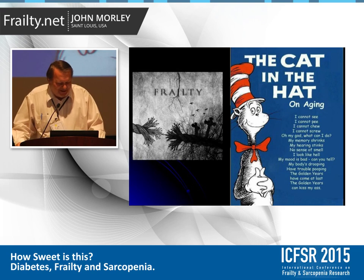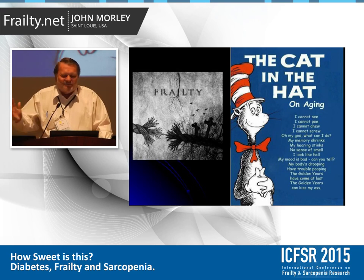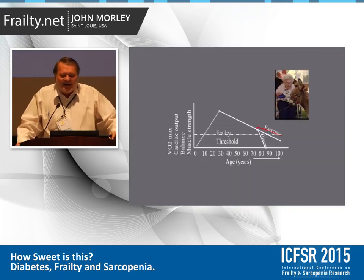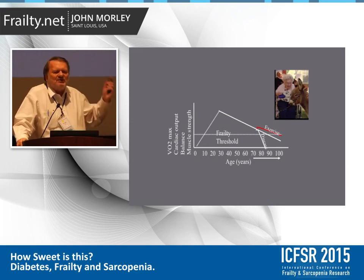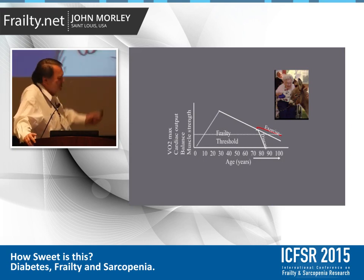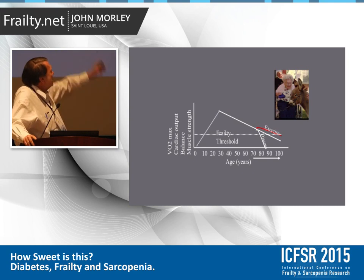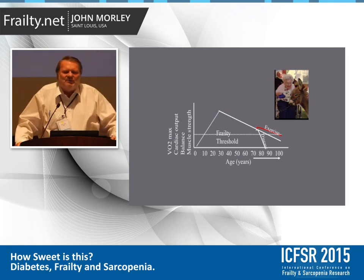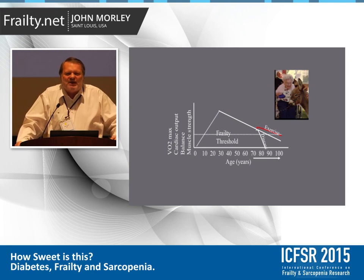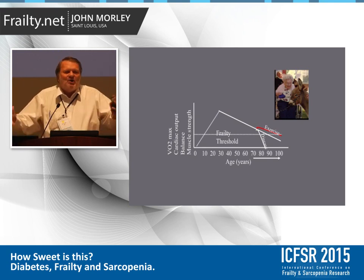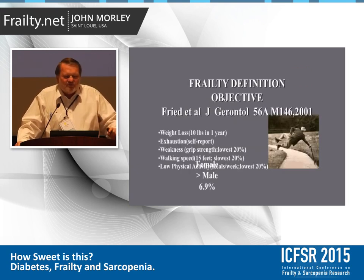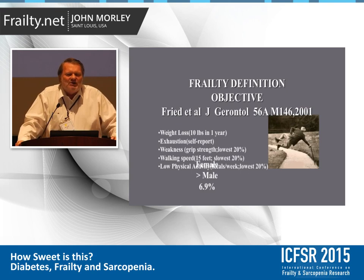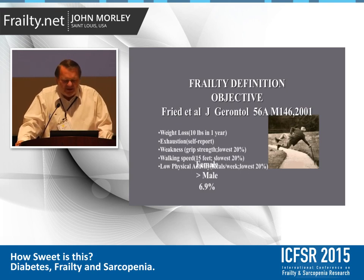Frailty starts at around about 30 years of age, as you can see, and we go down at roughly 1% per year towards that frailty threshold. If you exercise, as Marco just showed us, that will slow it down. On the other hand, if you get diseases, it will speed it up.